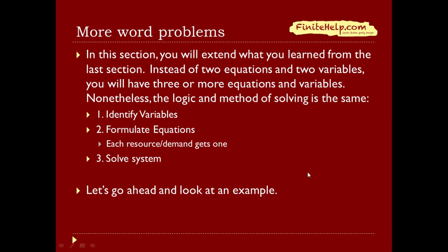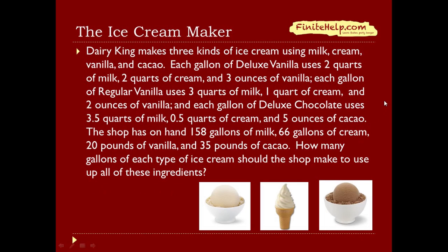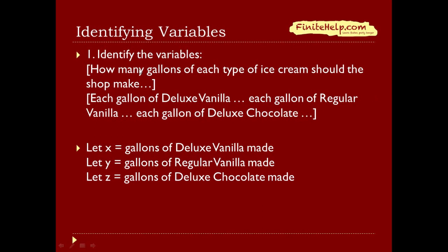Let's go ahead and look at an example. You can read this through and pause it, but I'm going to move on to how to solve this. To identify the variables, here's a quote from the problem: 'How many gallons of each type of ice cream should the shop make?' When you see 'how many should be made,' this is a hint that directs you to the variables, because you're trying to decide something.